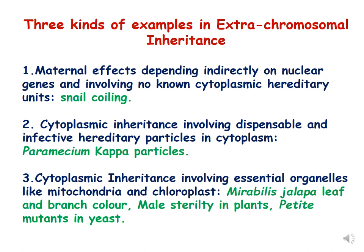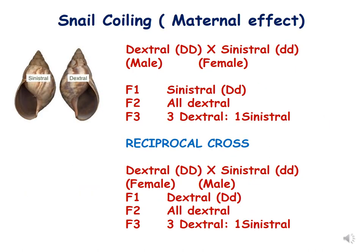We already discussed leaf variegation in Mirabilis jalapa in the first lecture. Today we discuss snail coiling, which is an example of maternal effect. Shell coiling in snails is of two types: right-handed and left-handed. When you hold the snail and the coiling pattern opens to the right, it is called dextral coiling; if the opening is on the left side, it is called sinistral coiling.